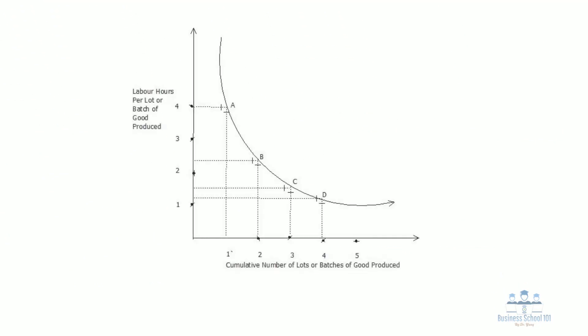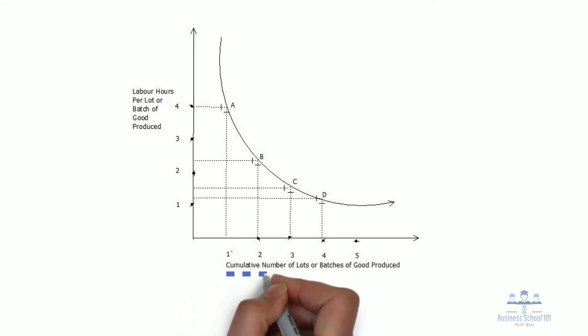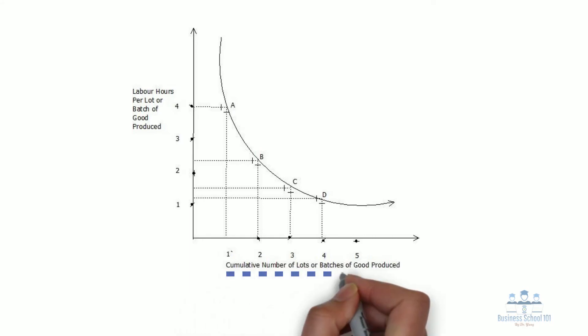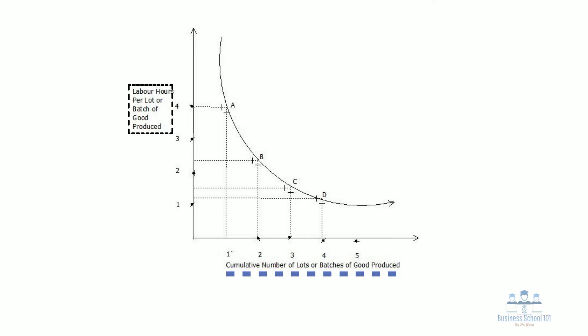The following diagram is a representation of the learning curve effect. As you can see, on the x-axis we have the number of lots, or batches, of goods produced, and on the y-axis we are considering the labor hours required per lot of goods produced. It is clear from the diagram that the labor hours required to produce each lot is higher when the firm is producing the first or initial few lots or batches of goods.